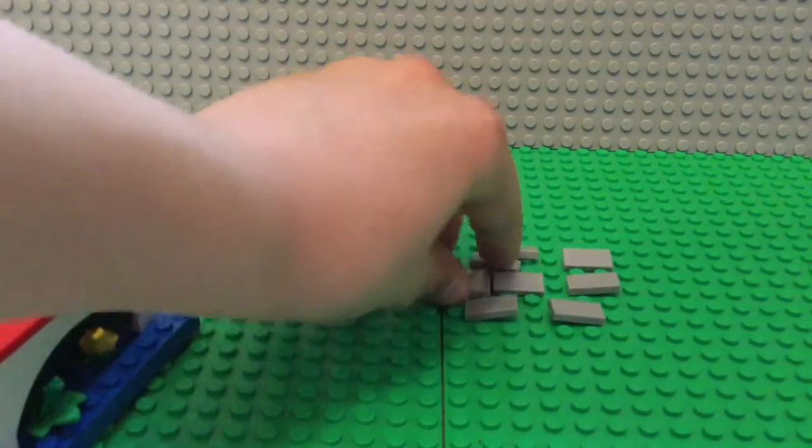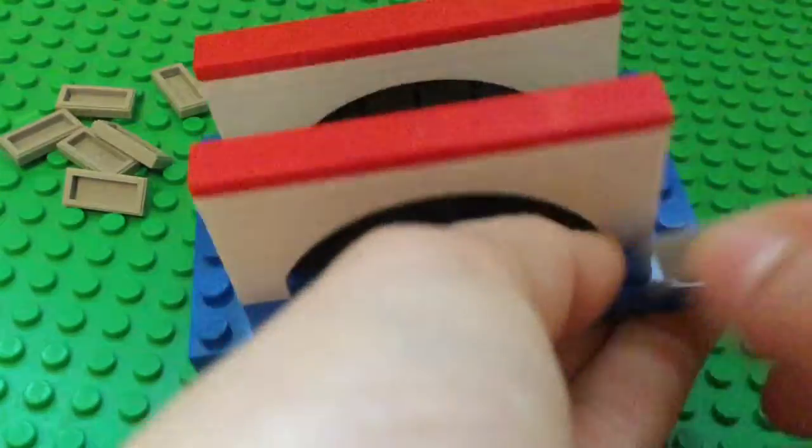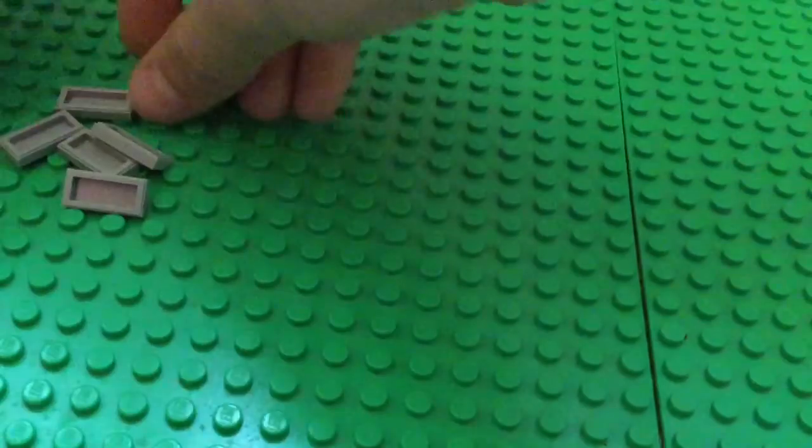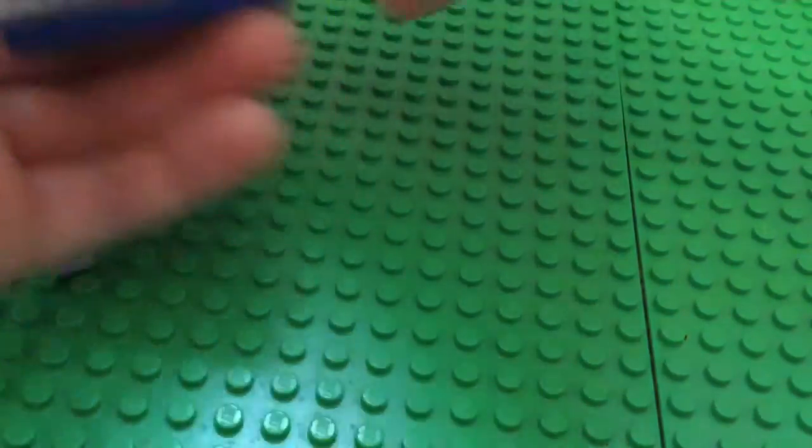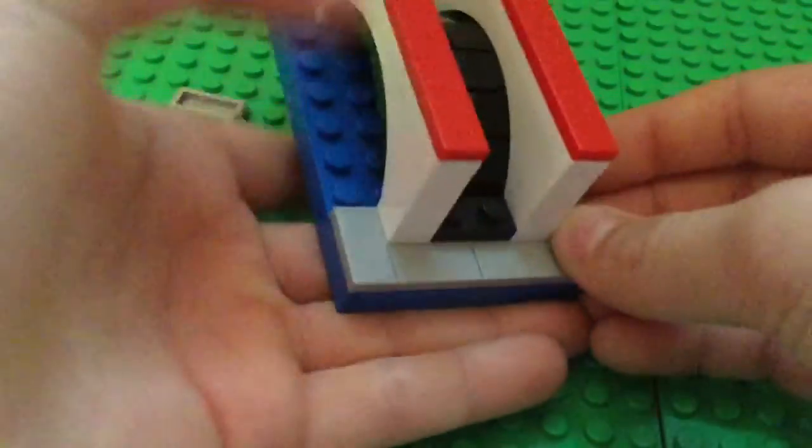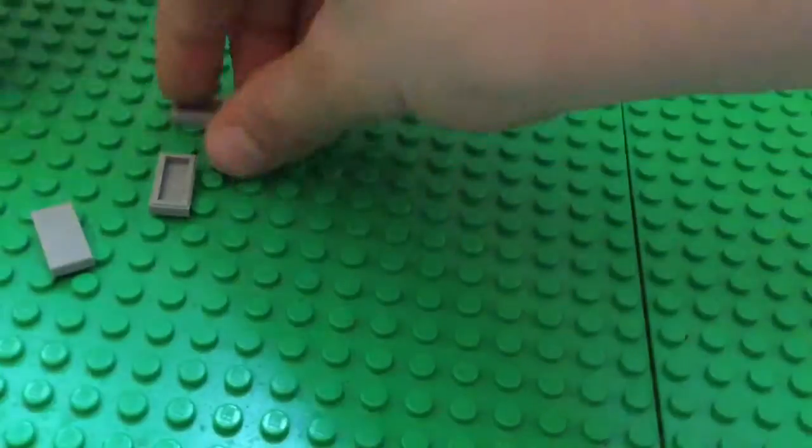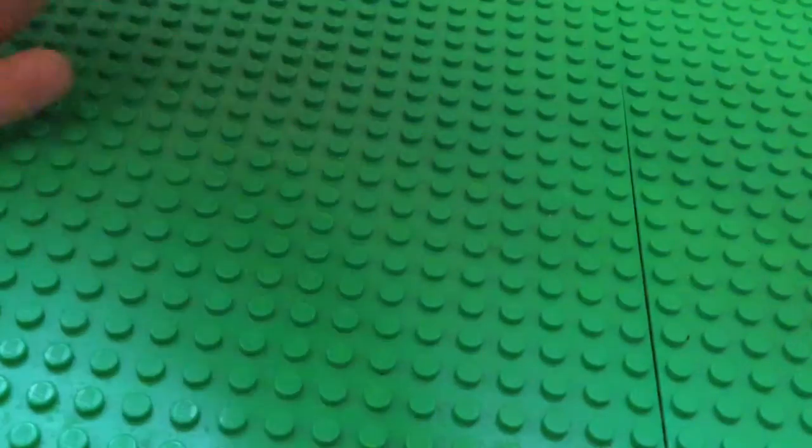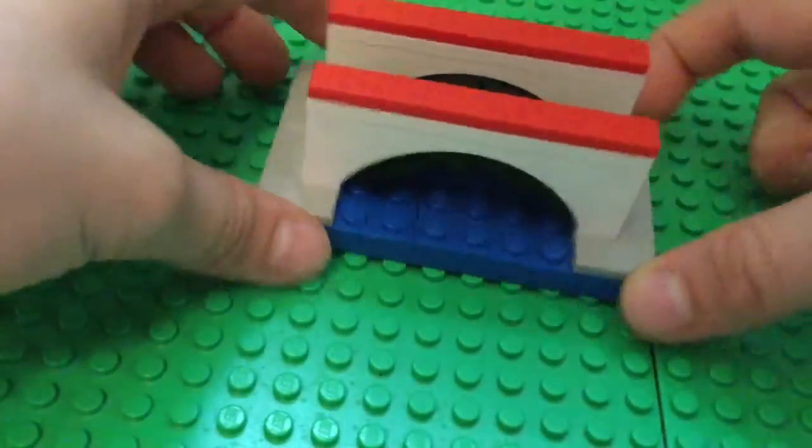Then you're gonna take eight of these one by two flat grey pieces. Take all of your one by two grey plates and you're just gonna stick them like this. And you're gonna do it on the other side. Just like so. So there you have it.